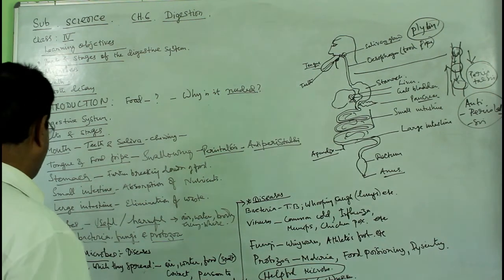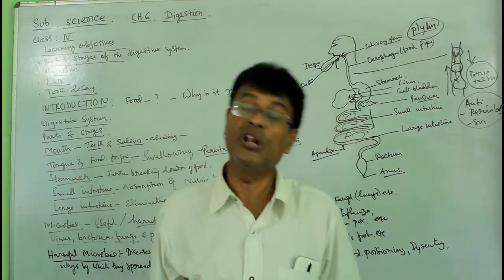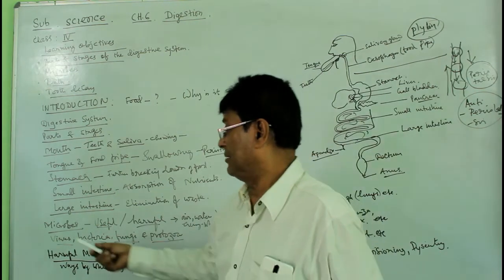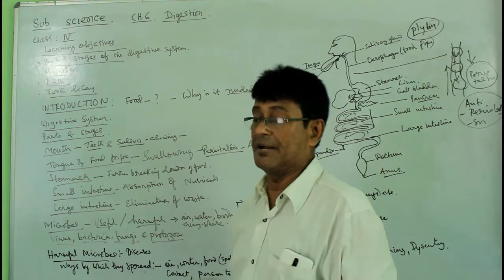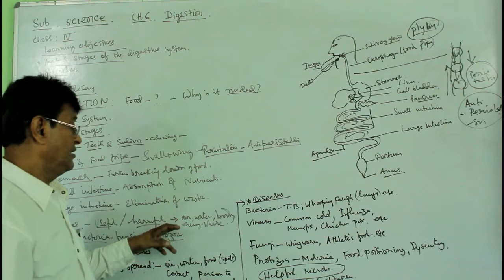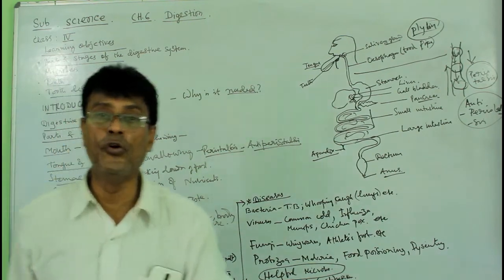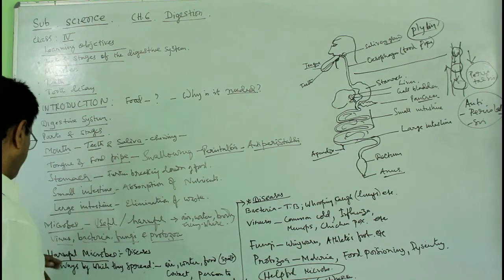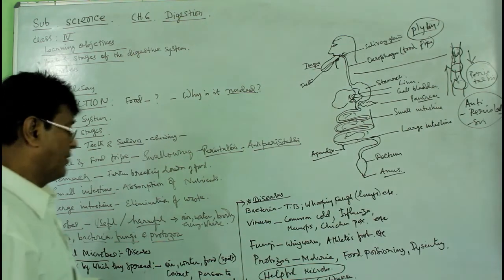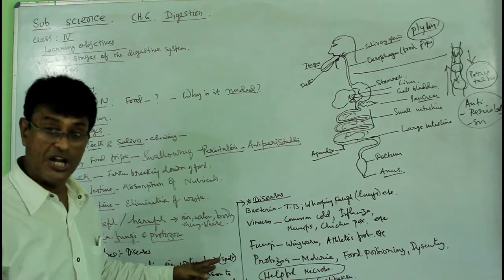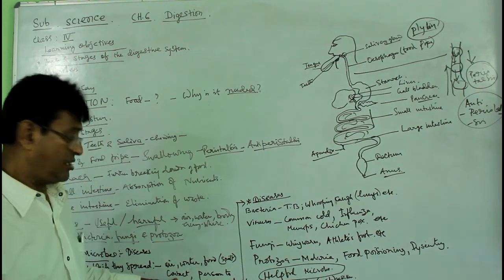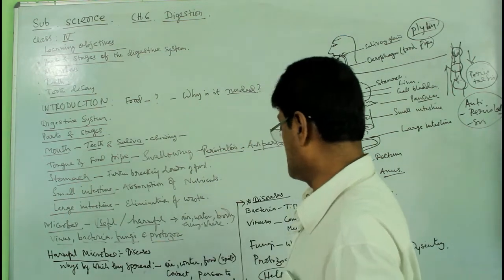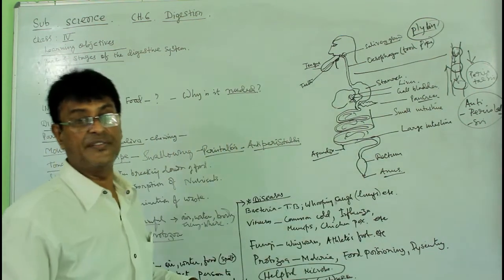Now we will discuss microbes. Microbes are very tiny creatures which can only be seen through a microscope. They have a lot of effect on our body — they can be both useful and harmful. Microbes occur everywhere: in the air, water, body, and food. Harmful microbes cause diseases that spread through air, water, spoilt food, and contact with infected persons or animals.